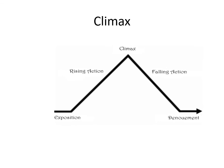Climax means the point of highest tension in a narrative — there is exposition, then rising action, and somewhere the story climbs to the point where we cannot bear the pain or excitement. That peak is the climax. After the climax comes the falling action, which is called anti-climax. Rising action is climax; falling action is anti-climax.